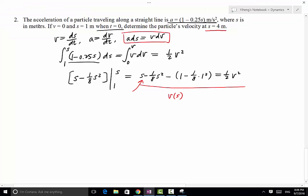So when s equals 4, we evaluate. One-half v squared equals 1.125. From here we can solve for v, which is 1.5 meters per second. And that is the final answer to this problem.